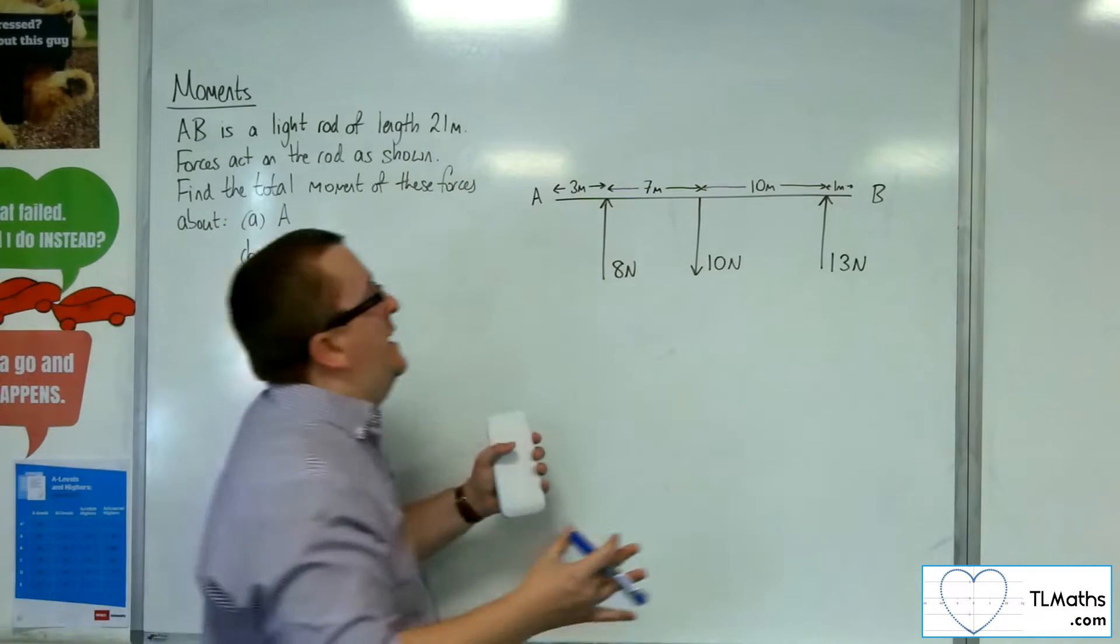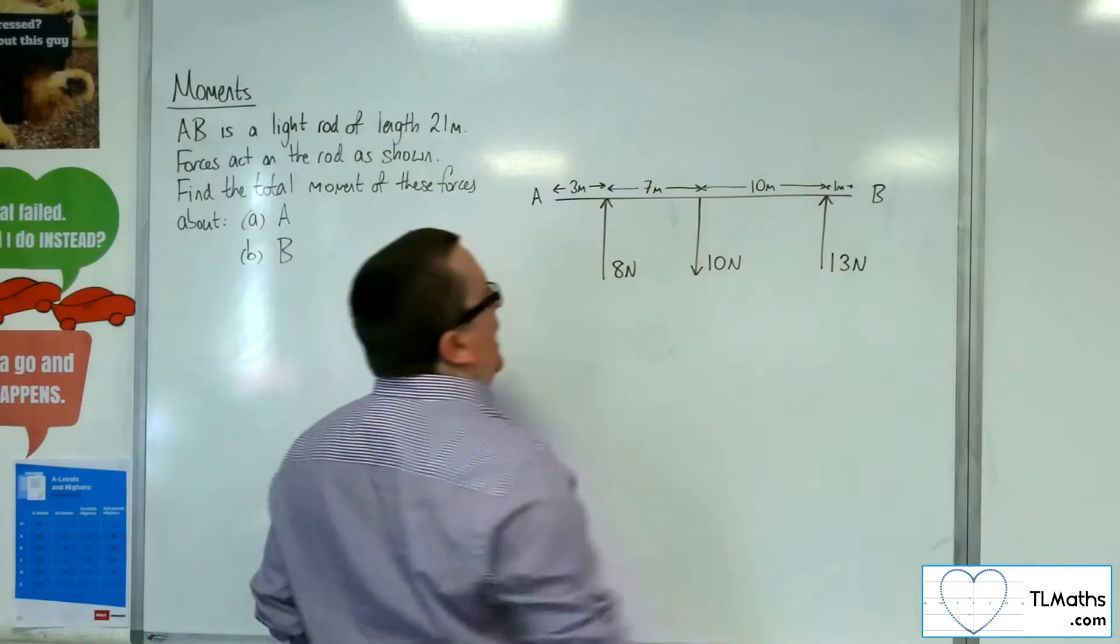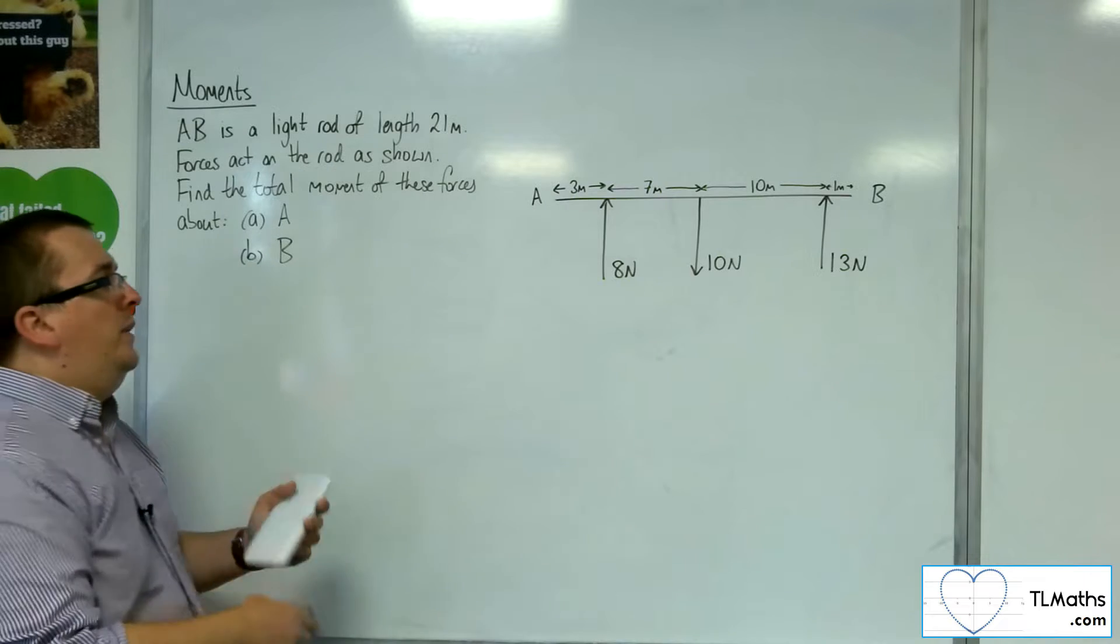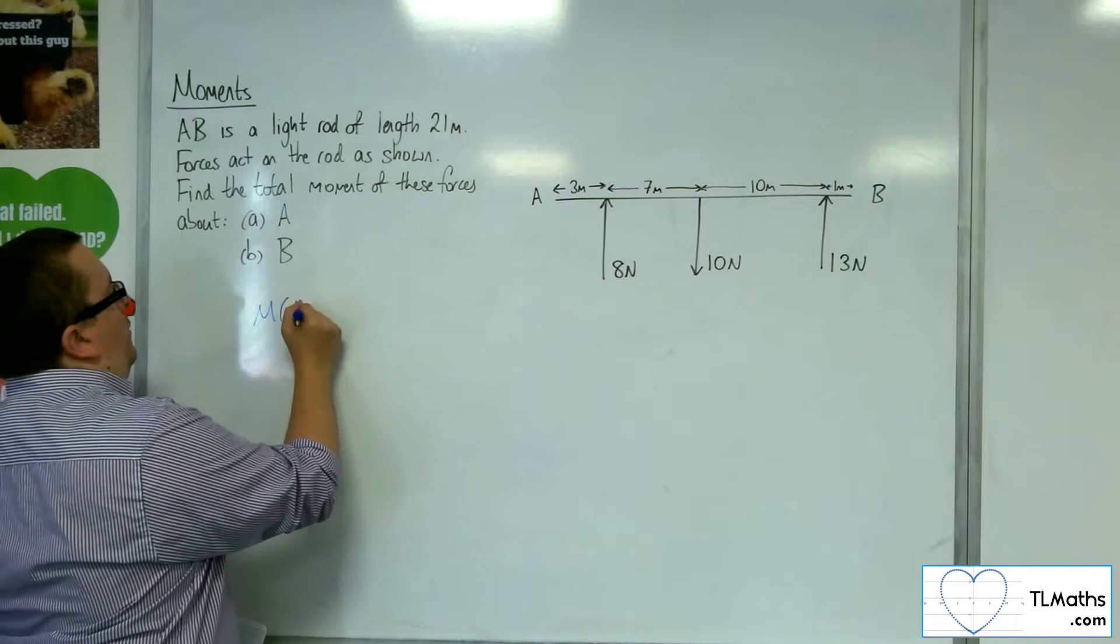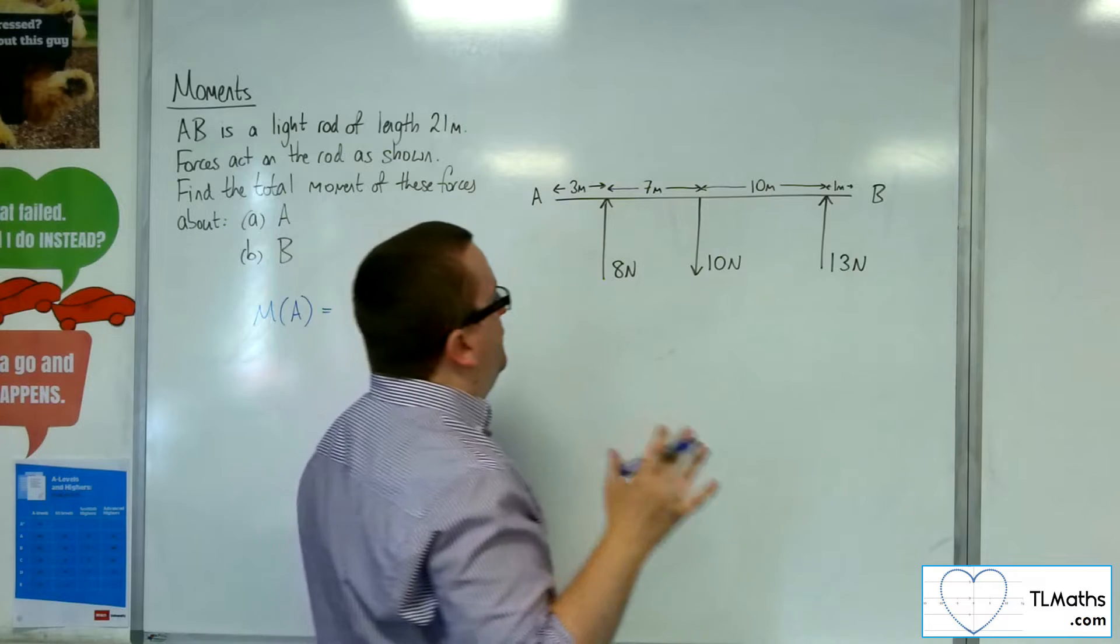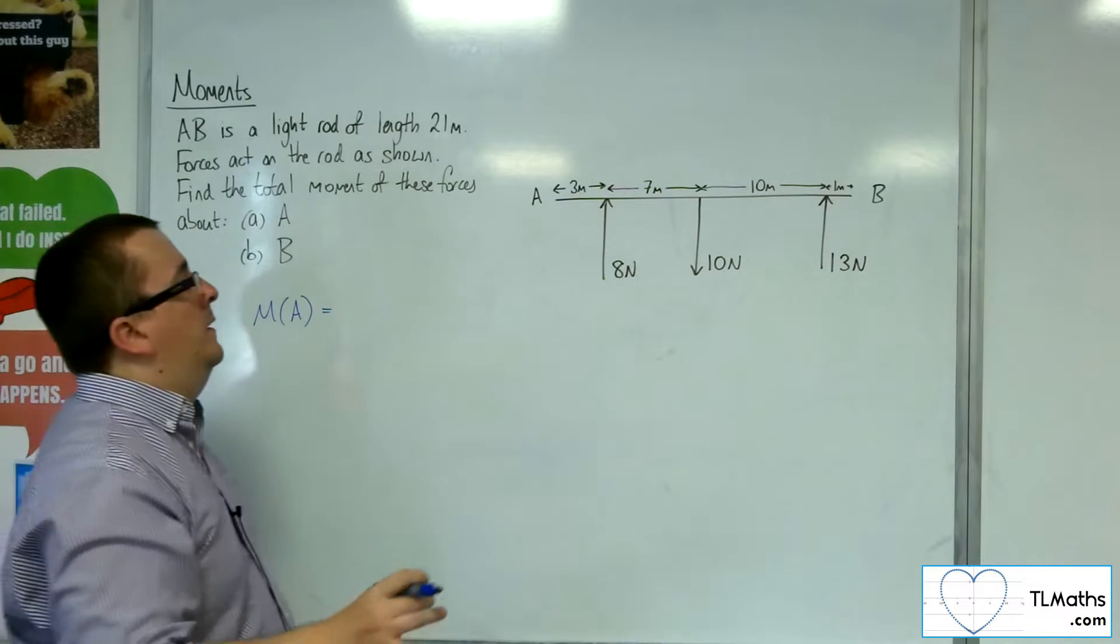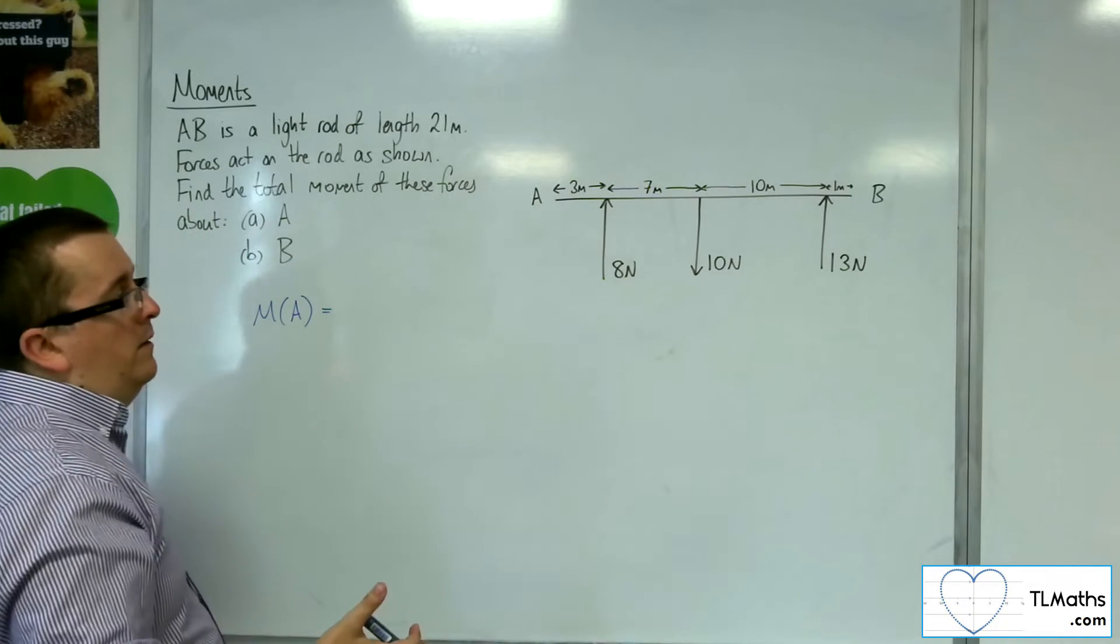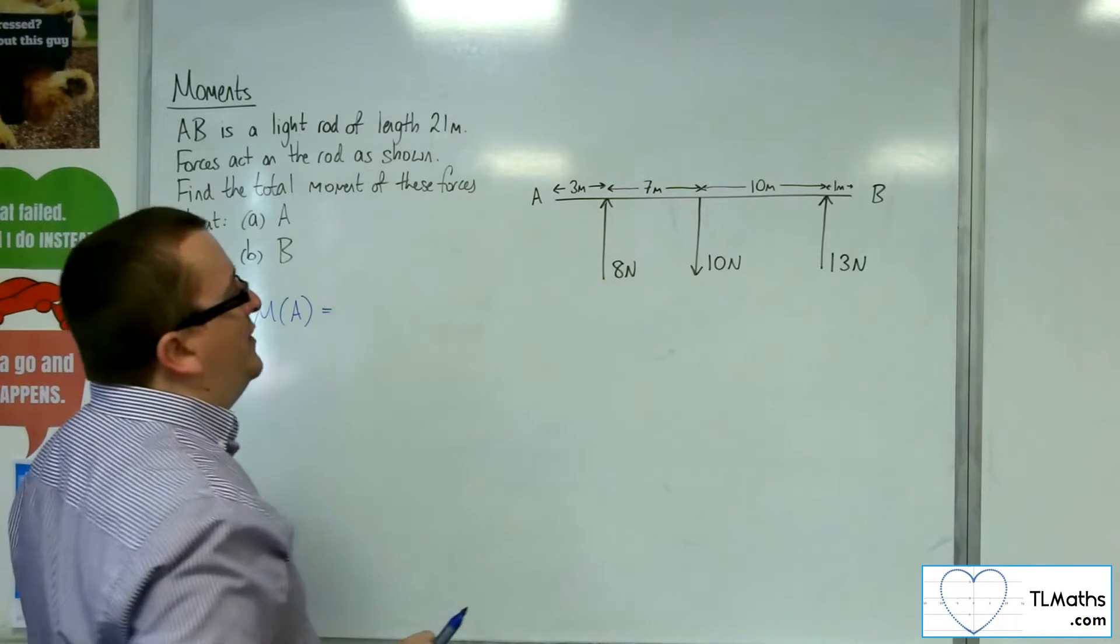So what you can see here is that these forces are being applied at different points along the rod. If I'm looking to find the moment about A, then what I'm looking to find is figuring out how far away I am from each of these forces, and then multiplying it by the perpendicular distance times the force and then thinking about the sense of which direction it's going.